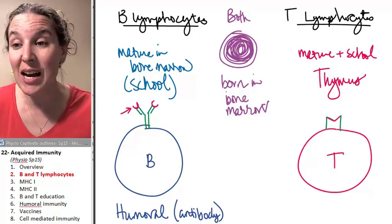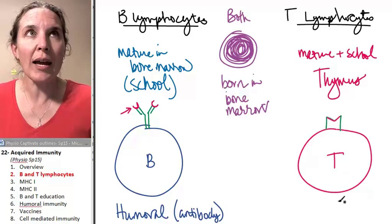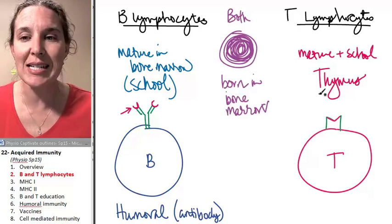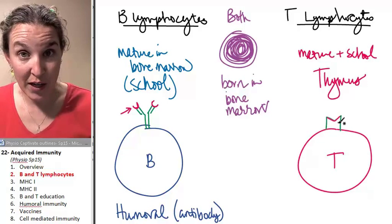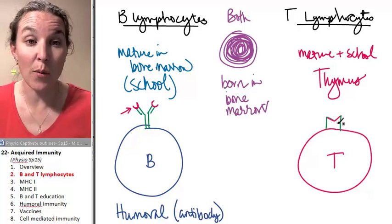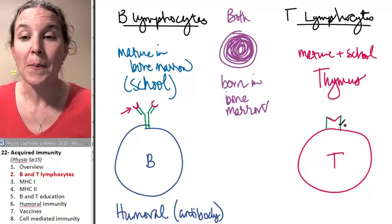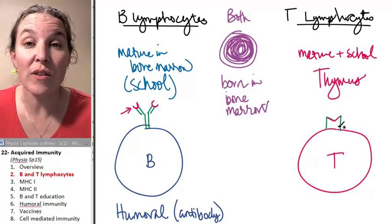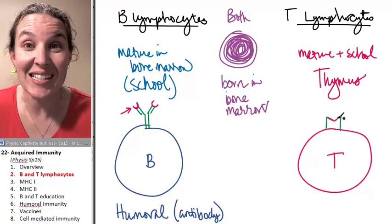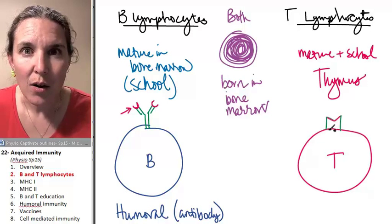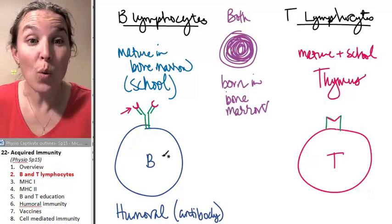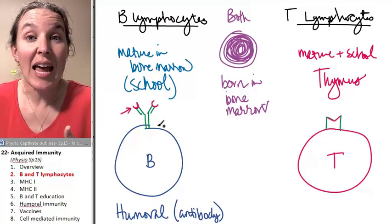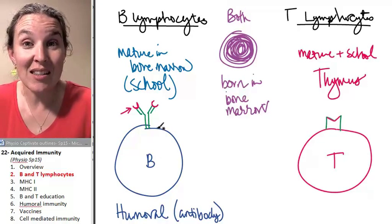So both of these guys, if you went out and surveyed T cells, all the T cells that you would survey, unless they were responding to an immune attack, all the T cells you surveyed would have a different T cell receptor. All the B cells have different antibodies embedded in their cell membranes.